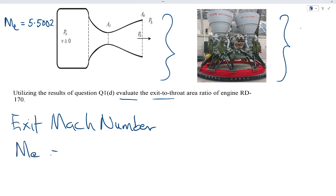Me to be 5.502. Now we are asked to find the exit-to-throat area ratio of this particular isentropic nozzle. How do we approach this question?